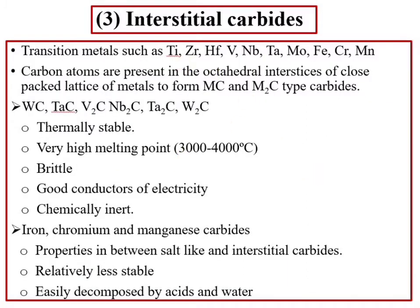The third category is interstitial carbides. Interstitial carbides are generally the carbides of transition metals such as titanium, zirconium, hafnium, vanadium, niobium, etc. In interstitial carbides, carbon atoms are present in the octahedral interstices of the close-packed lattice of metal atoms, forming MC and M₂C type carbides.